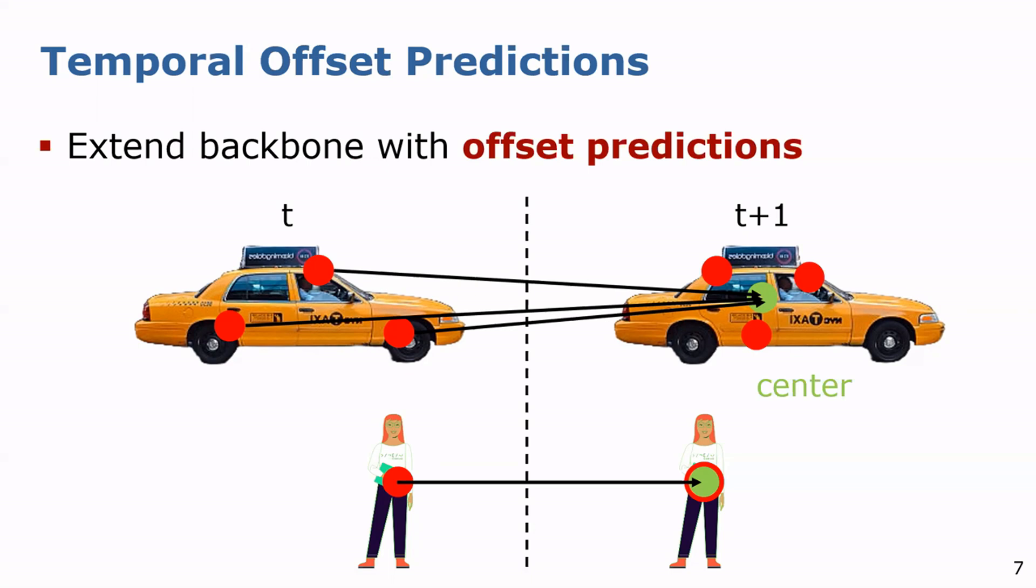The temporal offset points to the center of the instance within the next scan. Therefore, we can learn where the object is located in the future and based on that do the geometric matching of the instances. Furthermore, the temporal offset includes an additional motion cue.